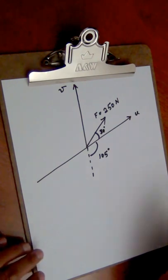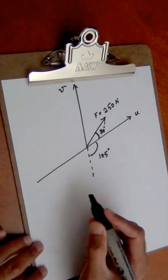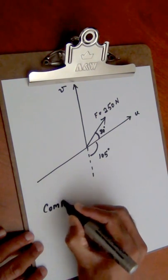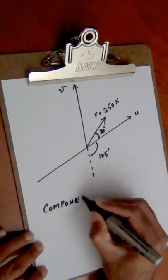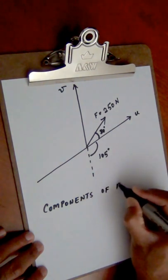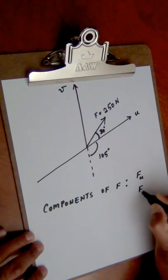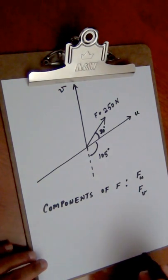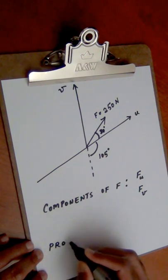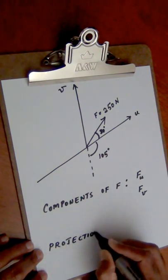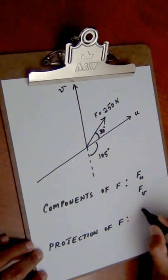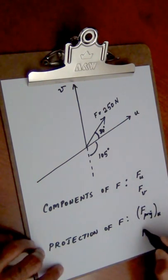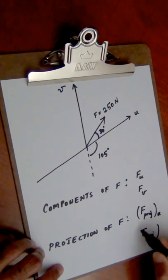So there are several things that we need to find in this problem. The first couple of things are the components of the force F along the U and V directions. Then we also need to find the projection of the force F along the U and V directions — let's call these F projection along U and F projection along V.